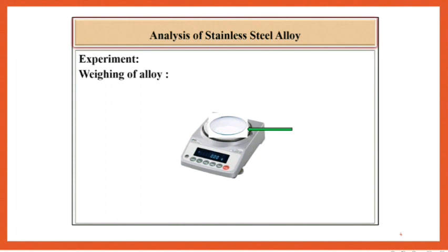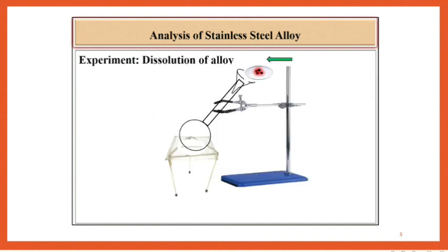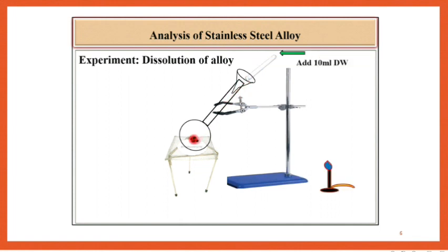Procedure: Weigh about 0.3 gram stainless steel alloy on a watch glass. Transfer this alloy into a Kjeldahl flask and add 10 ml distilled water. After this, add 5 ml concentrated HCl, keep the stem cut funnel as an air condenser.